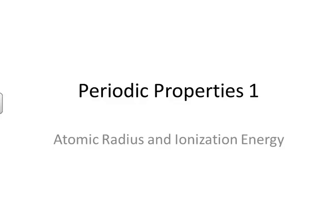Our next two videos are going to look at the periodic table and certain properties that are seen repeating themselves within the periodic table. Today is periodic properties one, and we'll look at the properties of atomic radius and ionization energy.